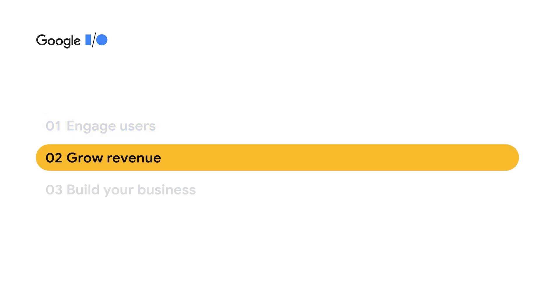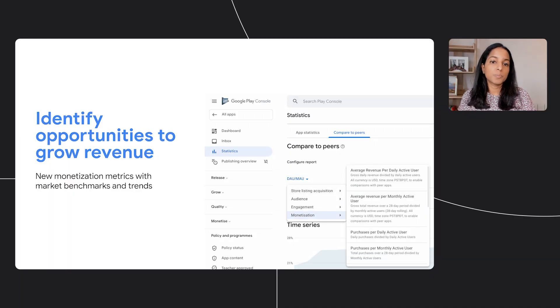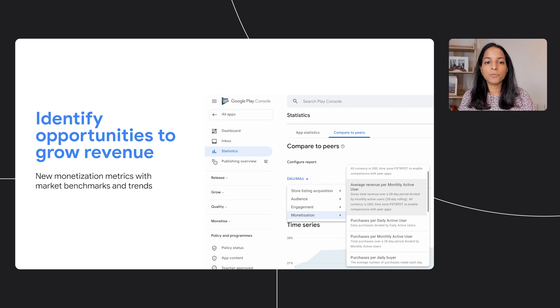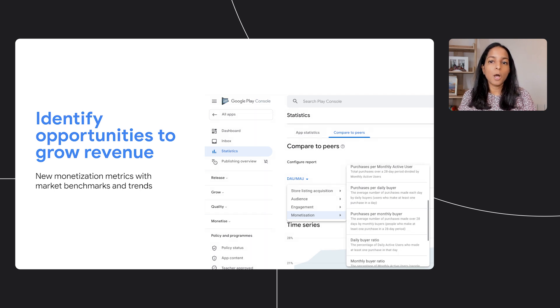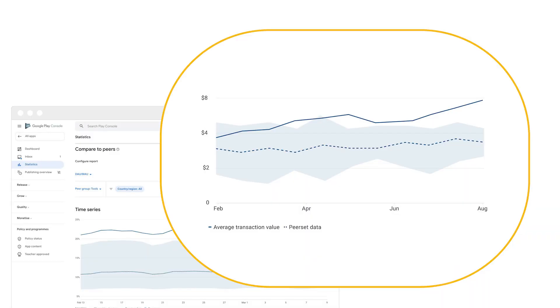We've applied the same insights and expertise in helping you grow your revenue by creating new, high-quality metrics, all with peer-set benchmarks. For example, imagine that we want to explore opportunities to grow our game's revenue. The new Compared to Peers tab also contains key monetization metrics to help you determine if it is possible to increase the number of users who purchase or to increase the amount that they spend with you. Now, using the peer-set comparisons,